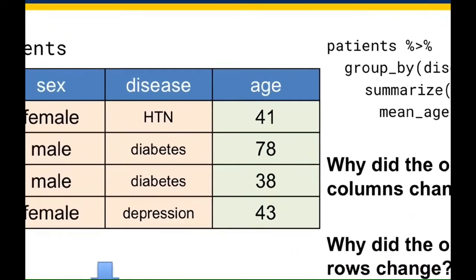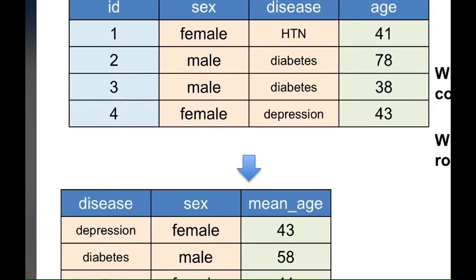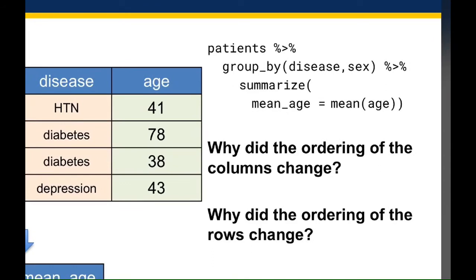Let's look at the ordering of the columns. The original data set had id, sex, disease, and age; the new one has disease, sex, and then mean age — sex and disease are reversed. This happened because I chose to group by disease and then sex, and the grouping columns always show up first in the order specified. If I wanted sex to show up first, I could reverse the order to group by sex, disease.